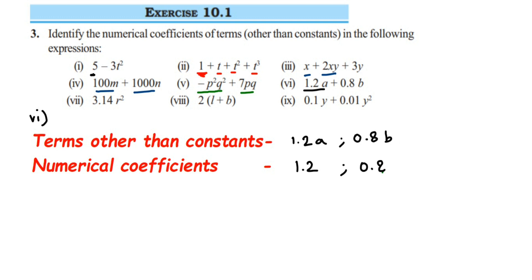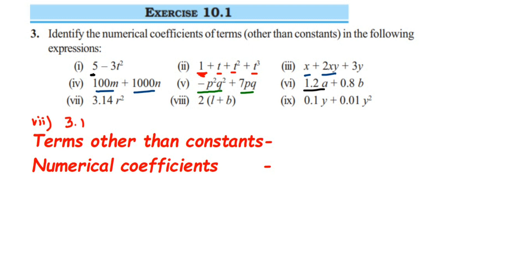Seventh question: it's 3.14r square. There is only one term present here, which is 3.14r square. Here r square is the variable part, and the numerical coefficient is 3.14.